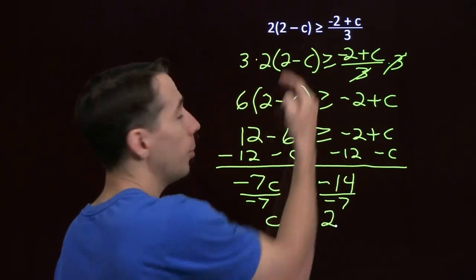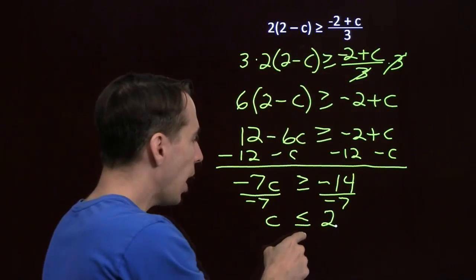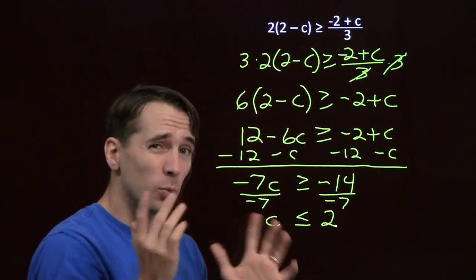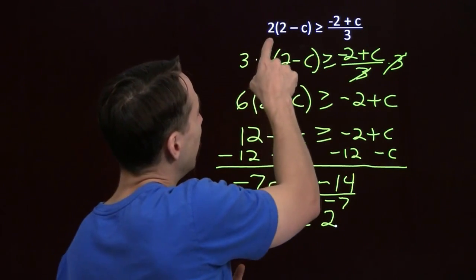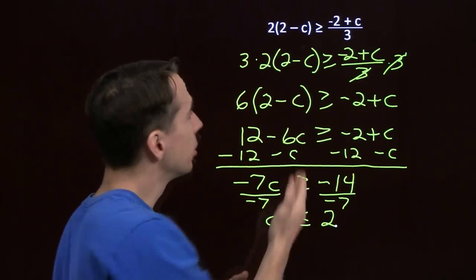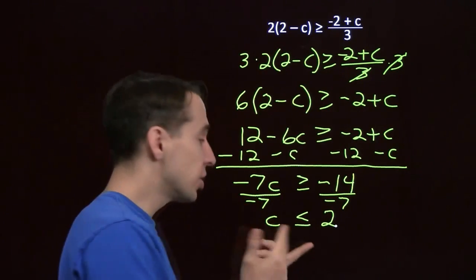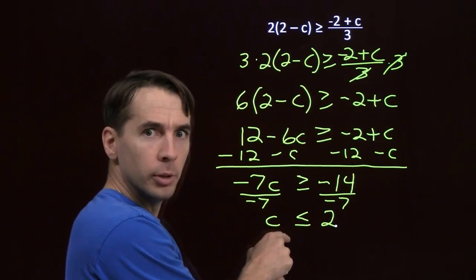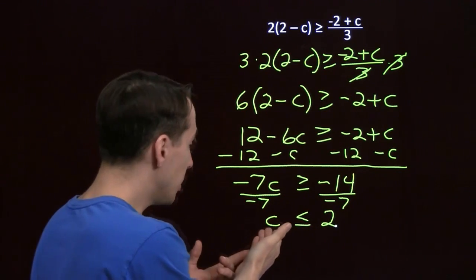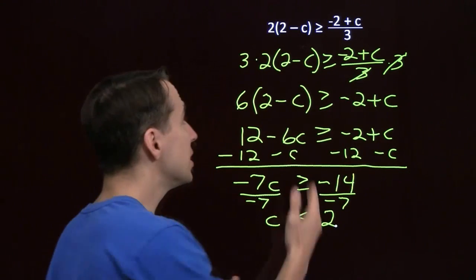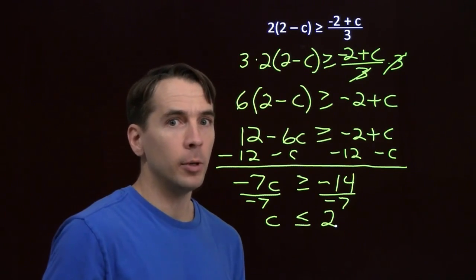We can test our answer. If we put 2 in for c, we get 0 on the left and 0 on the right — they're allowed to be equal, so that's okay. If I put 0 in, this tells me 0 is going to work: 2 times 2 is 4, and over there I get negative 2 thirds. 4 is of course greater than or equal to negative 2 thirds. If I'd forgotten to flip my inequality, this check would have reminded me. So our solution is c is less than or equal to 2. Our strategy for solving linear inequalities is basically the same as solving linear equations: isolate the variable and then check your answer.